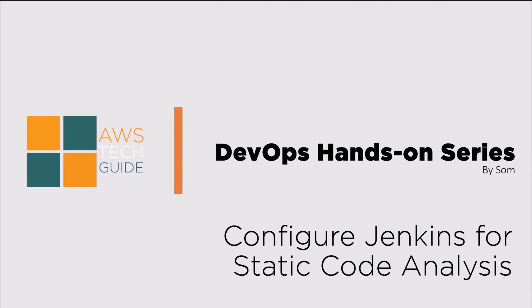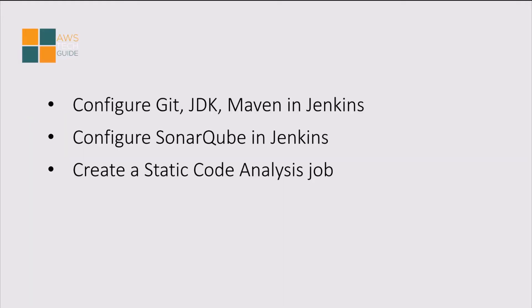Hello and welcome back to AWS Tech Guide Lecture. Today we will learn how to configure Jenkins for Static Code Analysis. If you are following this DevOps hands-on series of AWS Tech Guide, then you must have seen how to install Jenkins, Docker, or SonarQube in a virtual system. Now today we will configure Java Maven in Jenkins, configure SonarQube in Jenkins, and after that we will create a Static Code Analysis job in Jenkins.